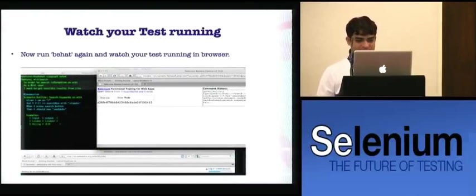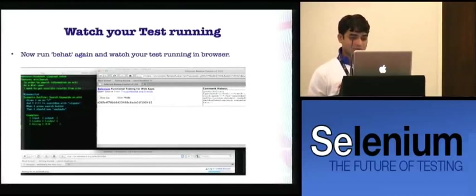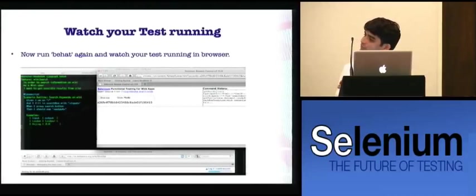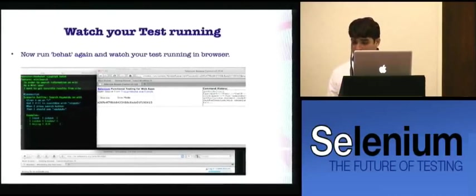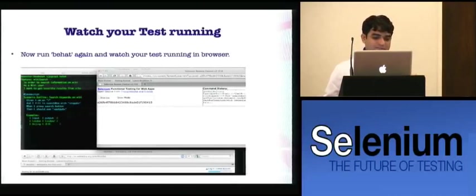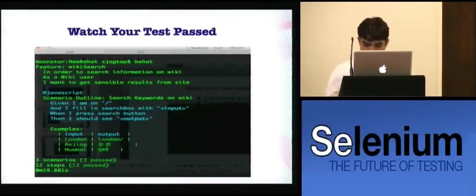Once you're done with your step definitions and you've launched your engine — Selenium or whichever driver you're using — if you're using Selenium 2, then you need to download the Selenium 2.0 JAR file, whichever the latest one. After that, when you run the Behat command, you will see the tests running in a browser. The browser launches, searches for the different parameters passed in the test — first the test runs for London, then Beijing, and so on. Once it finishes running, you can view the test results.